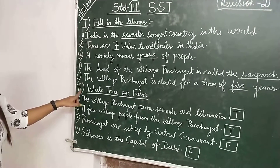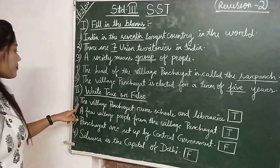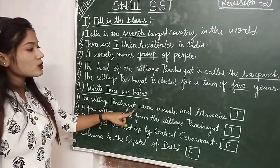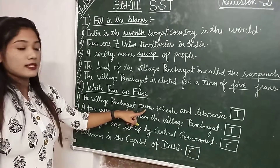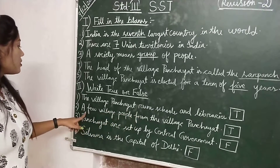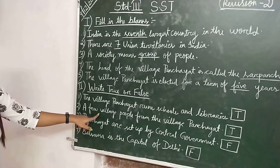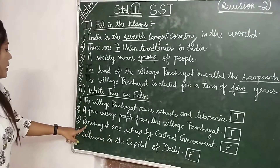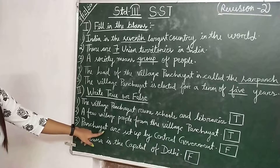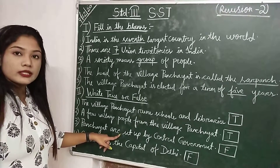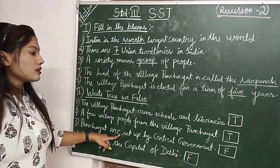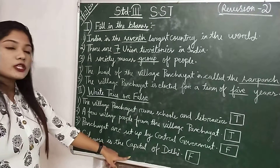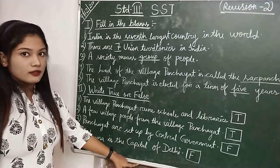Next is true or false. The village panchayat runs schools and libraries — true. A few village people form the village panchayat — true. Panchayats are set up by the central government — false. Silvassa is the capital of Delhi — false.